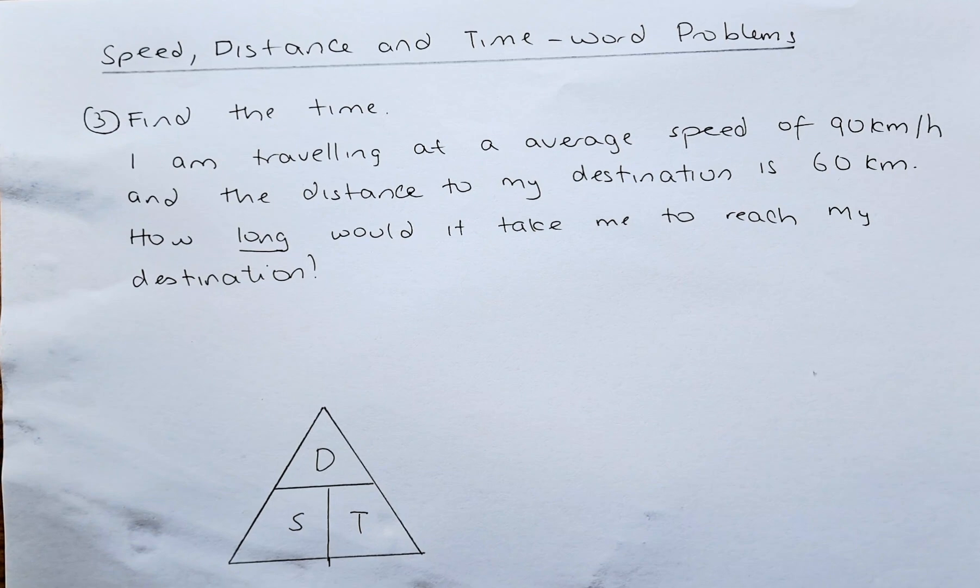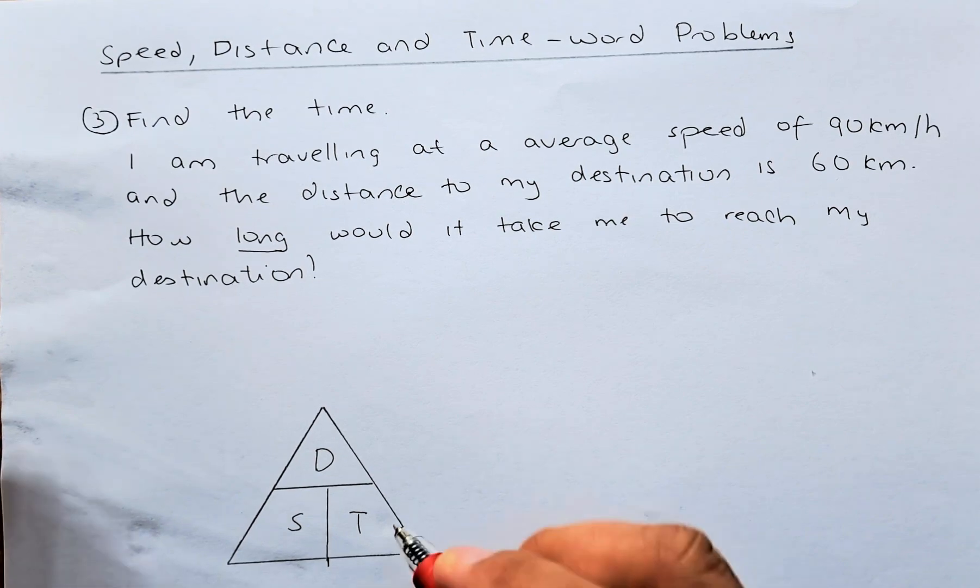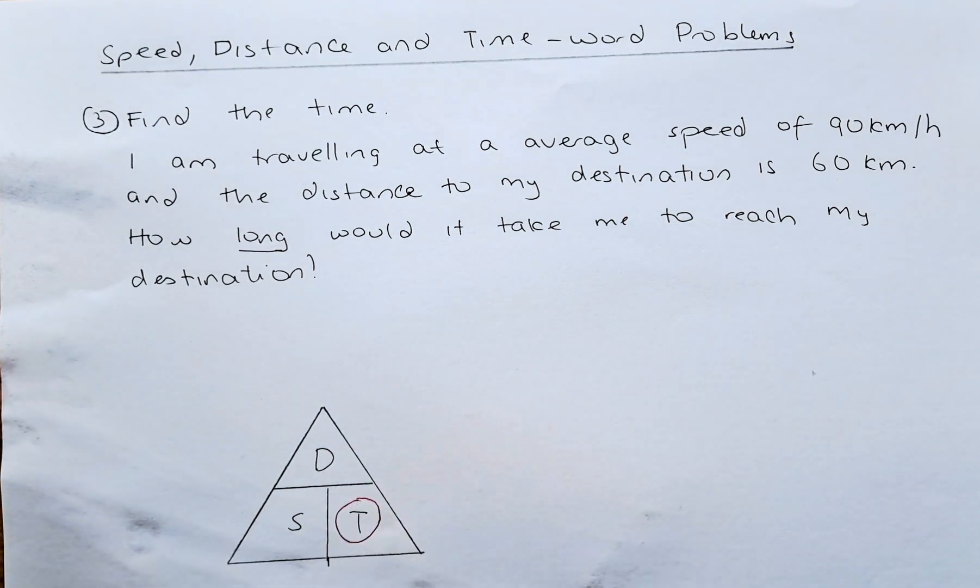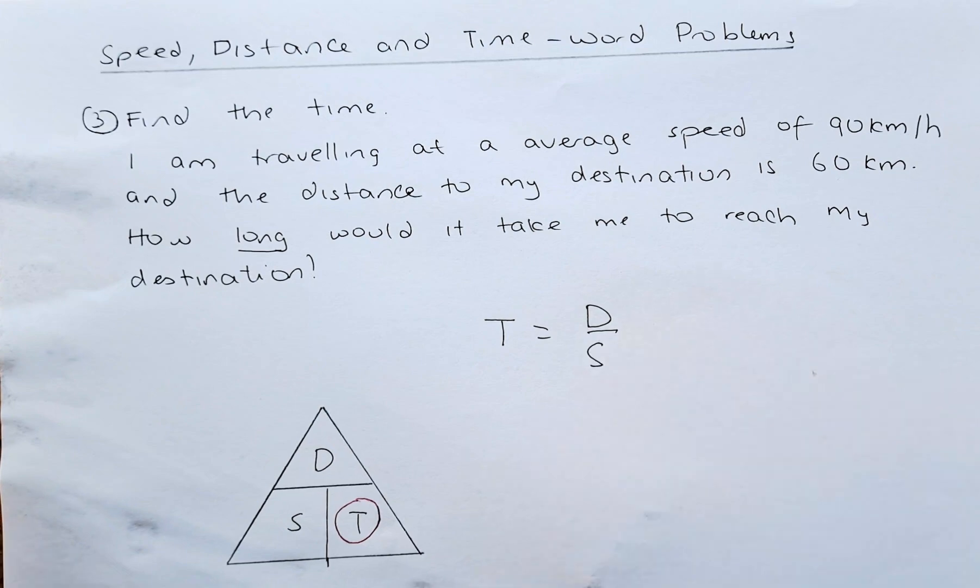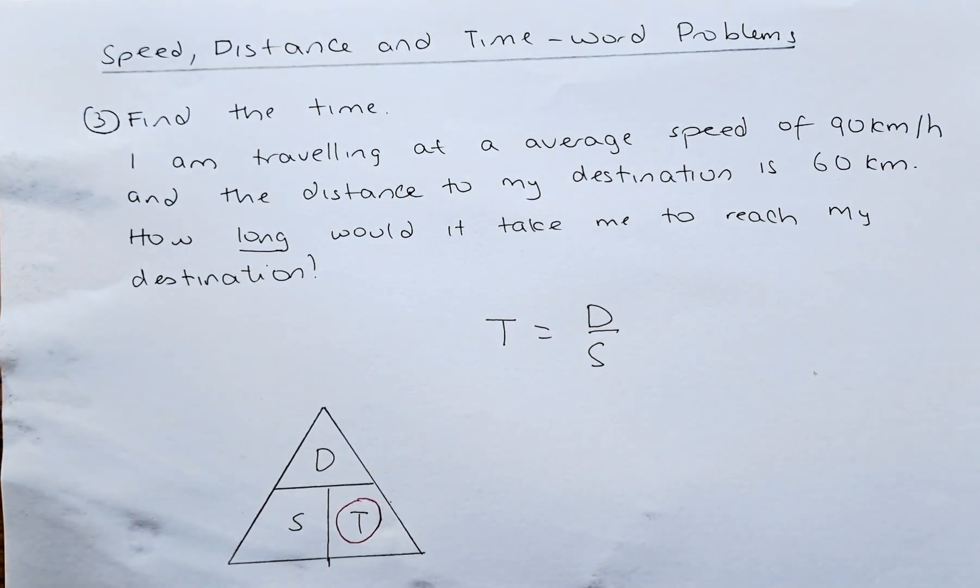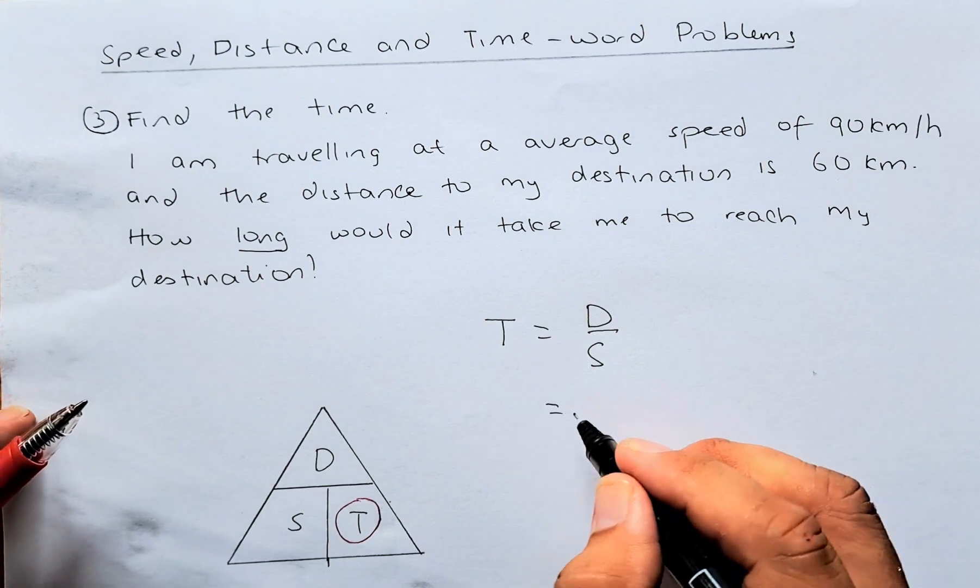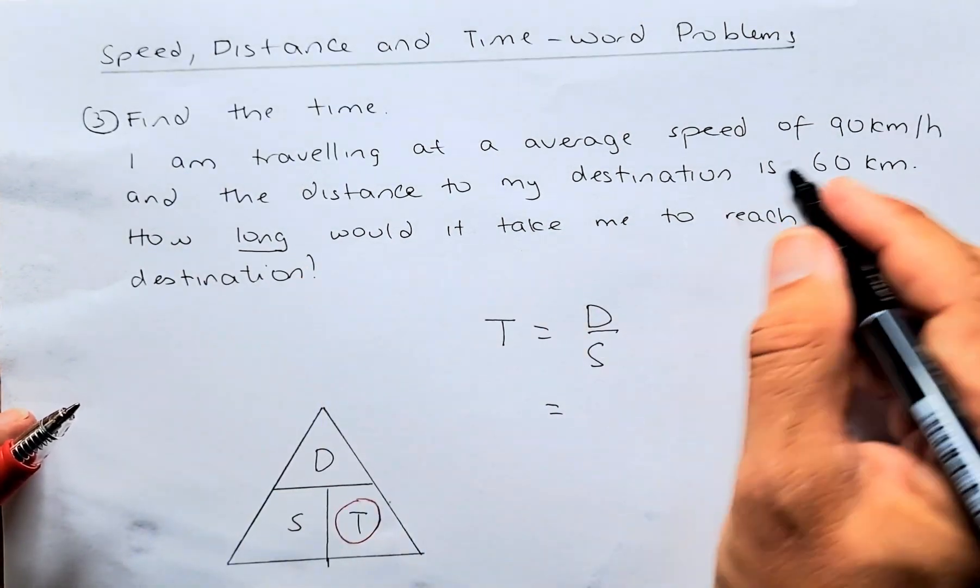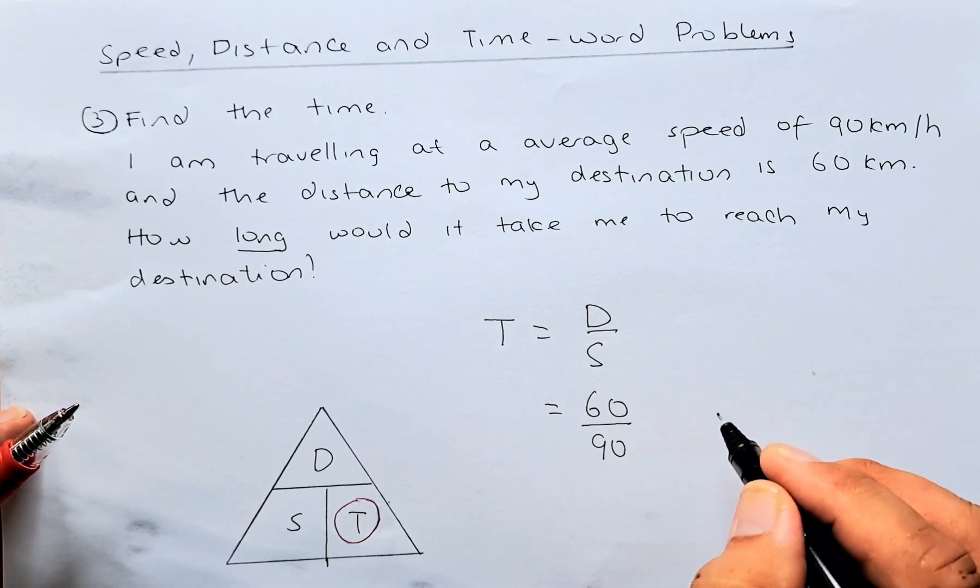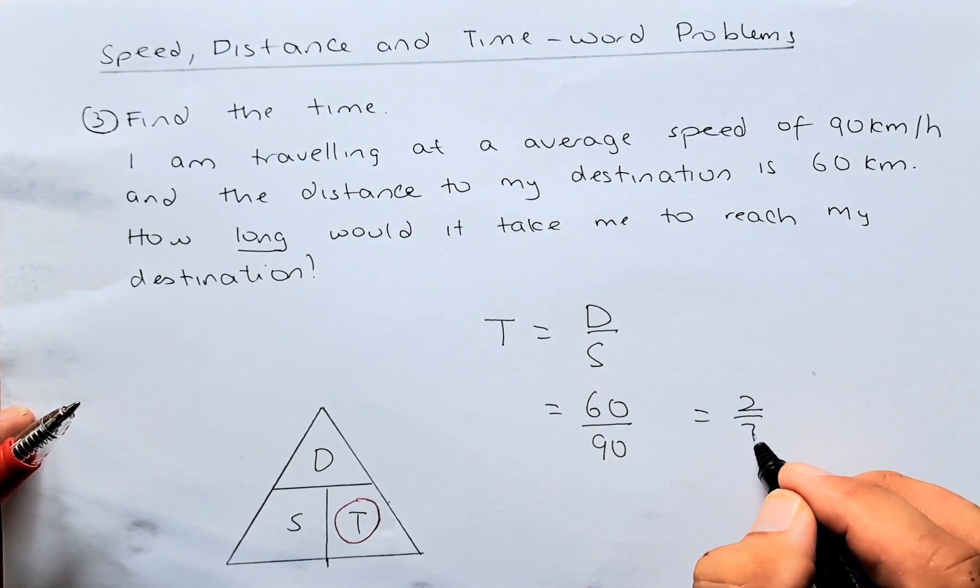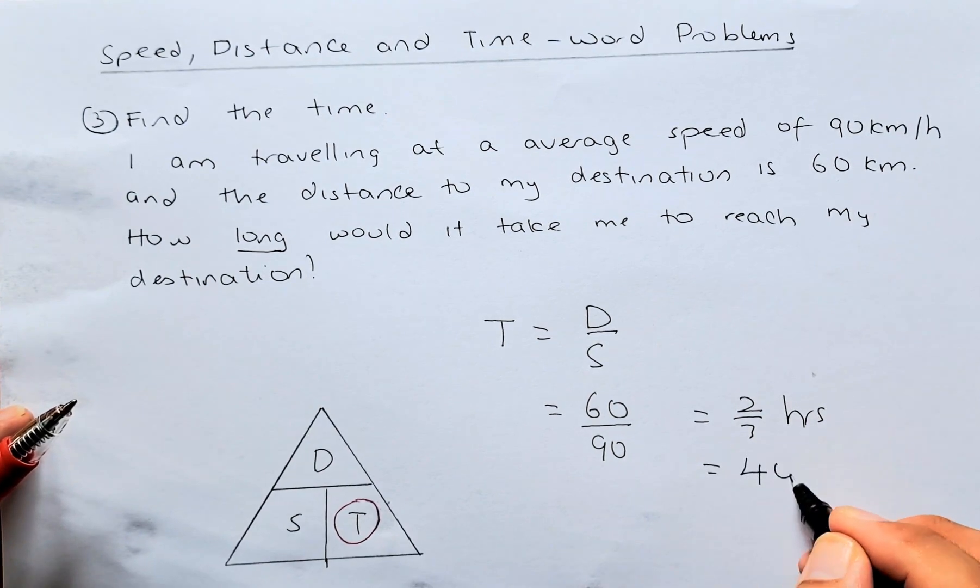This is how long. Long means how much time. So that's why we are calculating the time. To do that, we are going to circle T because that's what we are going to find. And because D is on top of S, it is going to be D divided by S or time equals distance over speed. To get the answer, you substitute the value. The distance is going to be 60 km and the speed is 90 km. And the answer is going to be two-thirds hours. Or you simplify them, it is going to be 40 minutes.